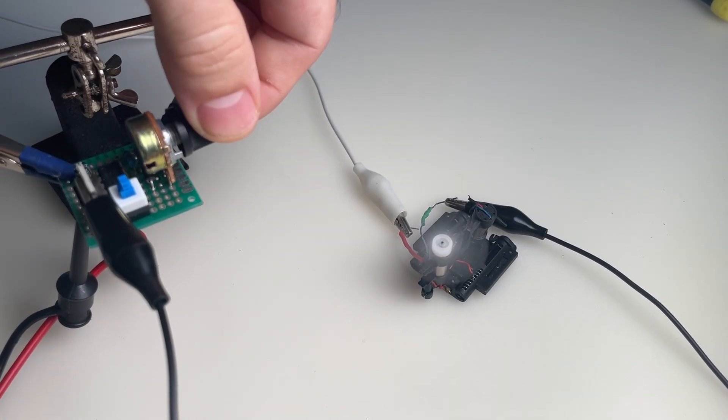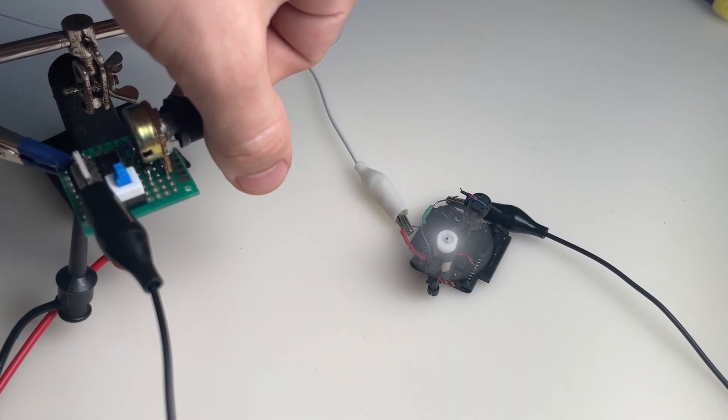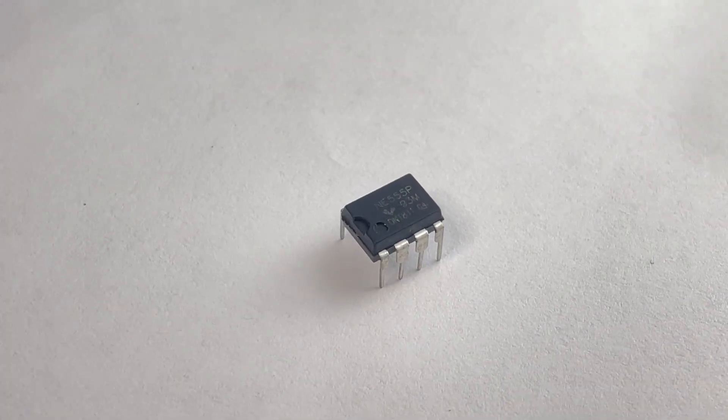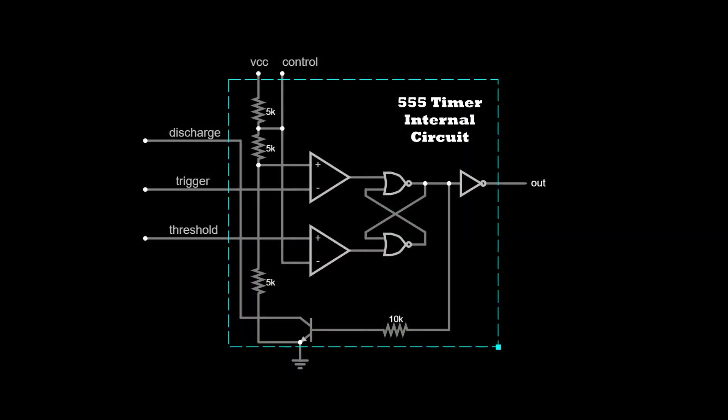To get started, let me introduce the components used for this circuit. The heart of this circuit is the 555 timer IC. This is a versatile IC consisting of comparators, a flip-flop, resistors, and a discharge transistor.